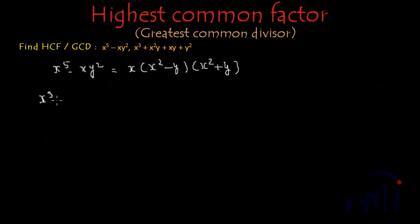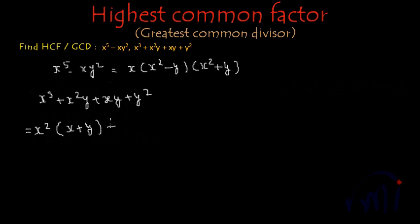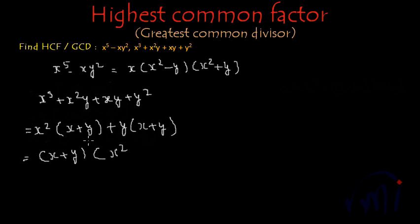The second expression is x cubed plus x squared y plus xy plus y squared. So if we see the first two terms properly, from here we can take x squared common and inside the bracket we will be left with x plus y. And from the last two terms we can take x plus y common and we will be left with x squared plus y. So the factors of x cubed plus x squared y plus xy plus y squared are x plus y multiplied by x squared plus y.